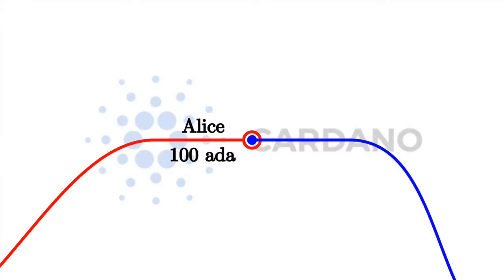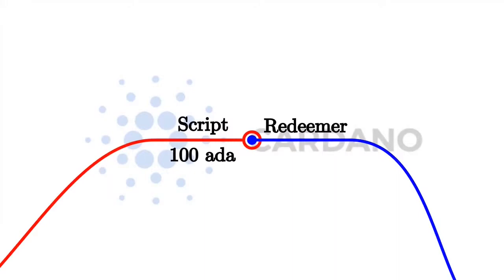So instead of just having an address that corresponds to a public key and that can be verified by a signature added to the transaction, we have more general addresses that are not based on public keys or the hashes of public keys. Instead, they contain arbitrary logic that can decide under which condition this specific UTXO can be spent by a transaction. There will be an arbitrary script containing arbitrary logic. And instead of the signature in the transaction, the input will justify that it is allowed to consume this output with some arbitrary piece of data that we call the redeemer.